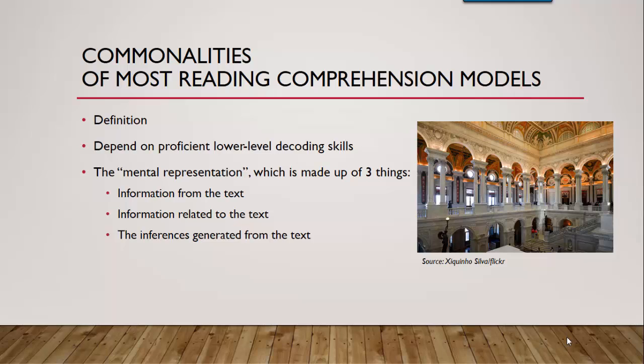Reading comprehension is the processing of information to extract meaning — specifically, we are creating meaning from the text we have encountered. Comprehension and decoding go hand in hand. All models of reading comprehension theory assume that the lower-level decoding skills are firmly in place in order for comprehension to happen. The term mental representation refers to the outcome of the reader's text comprehension processing, and the reader's mental representation is made up of three things: information from the text, information related to the text, and the inferences that are generated.